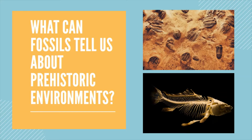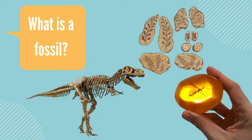Hello, my name is Ali Jo and in this video we are going to learn what fossils can teach us about prehistoric environments. First, let's answer the question: what is a fossil? Fossils are preserved remains or impressions of past living things such as animals like dinosaurs, plants like these ferns, or insects like this mosquito trapped in amber. Fossils can be thousands to millions of years old and tell us a lot about past or prehistoric environments.